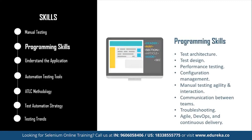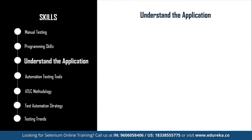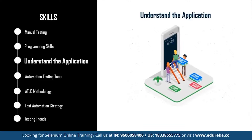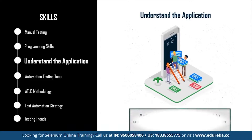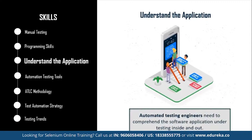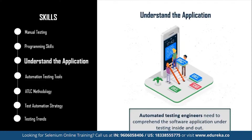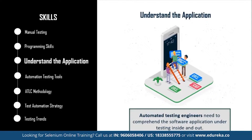Next up is to understand the application. The common application details that every automation tester needs to take care of include: which programming languages were used to develop the application, on what platform the application is built, which databases are involved, whether there are any web services or APIs connected to different parts of the system, and many more. Make sure you are completely thorough with the application you are going to test via automation testing.